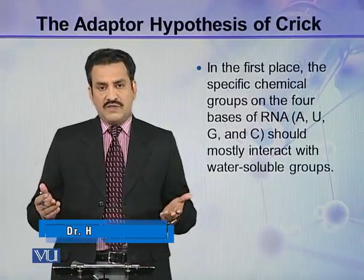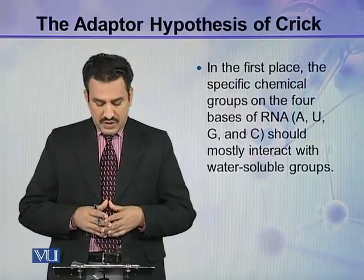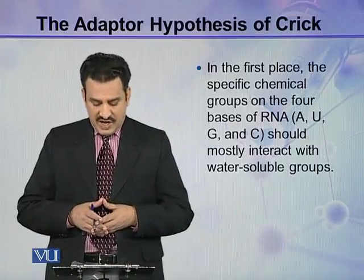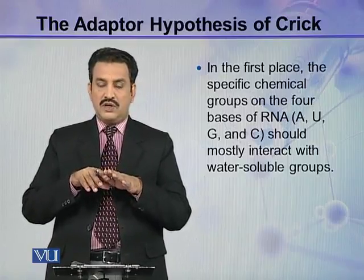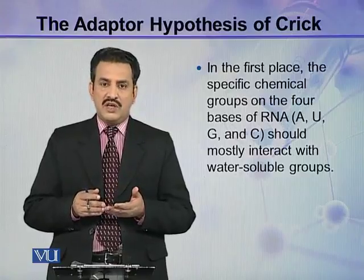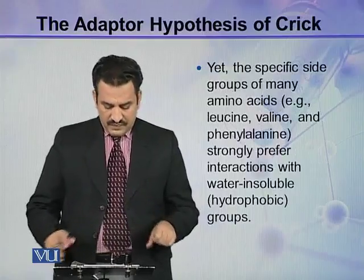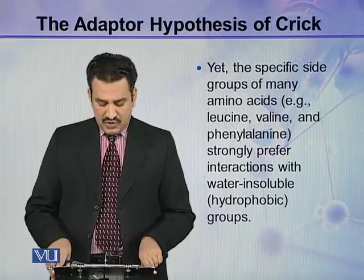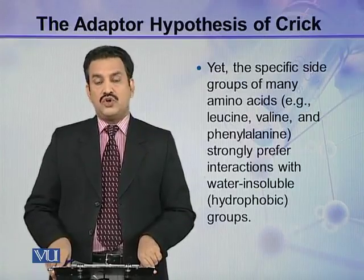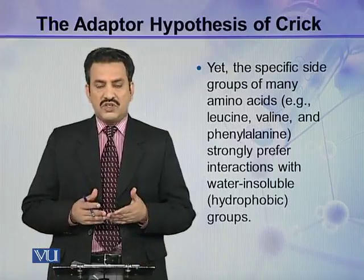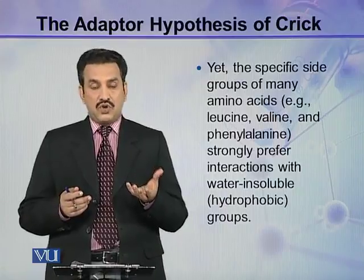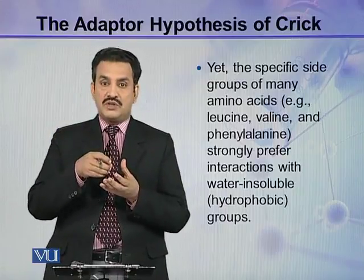In the first place, why would it never work? The specific chemical groups present on the four bases of RNA — adenine, uracil, guanine, and cytosine — should mostly interact with water-soluble groups. The substituents or atoms on these nitrogenous bases would prefer only interactions with hydrophilic groups. Yet the specific side groups of many amino acids like leucine, valine, and phenylalanine strongly prefer interactions with hydrophobic groups. So the first question was: how could nitrogenous bases, which love to interact with hydrophilic groups, interact with hydrophobic groups? It can never happen.